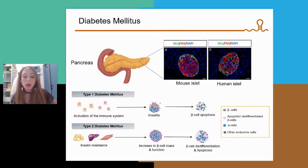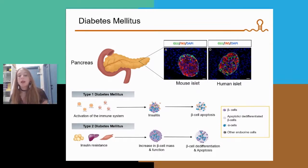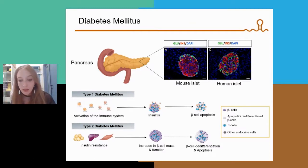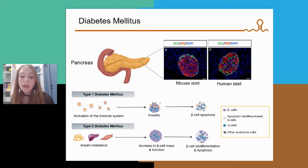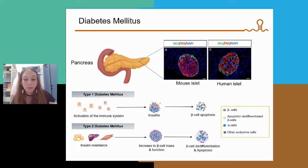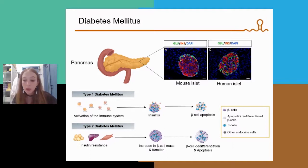Glucagon and insulin are secreted by alpha and beta cells respectively, which are found clustered together with other endocrine cells in the islets of Langerhans within the pancreas. Diabetes mellitus appears when beta cells cannot produce enough insulin to keep physiological levels of glucose in blood.